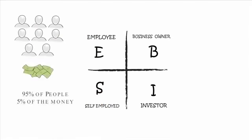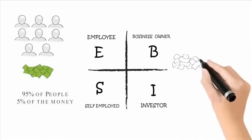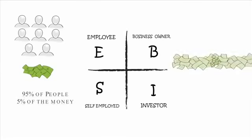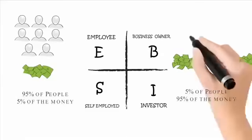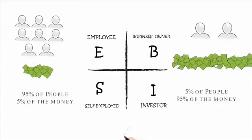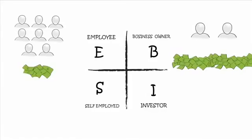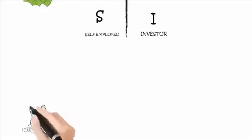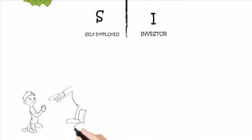95% of the population lie on the left side of the quadrant but they only control 5% of the money. 95% of the wealth is made by the people on the right side of the quadrant, and only 5% of the people are fighting over it. So it's a much better place to be if you want wealth. The rat race is what they call the left side of the quadrant, and the whole game of life and business is get to the right and live like the people on the right.